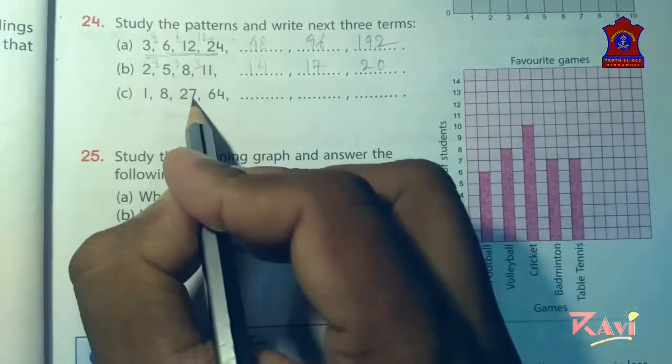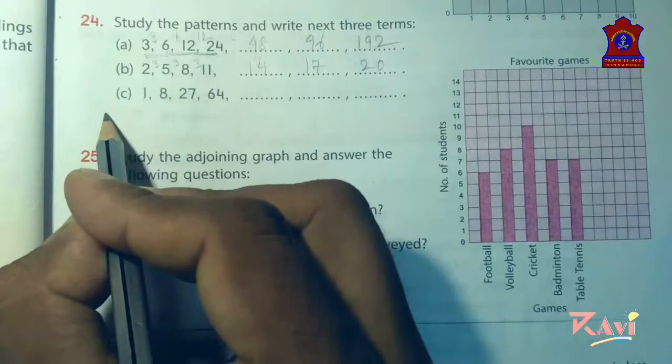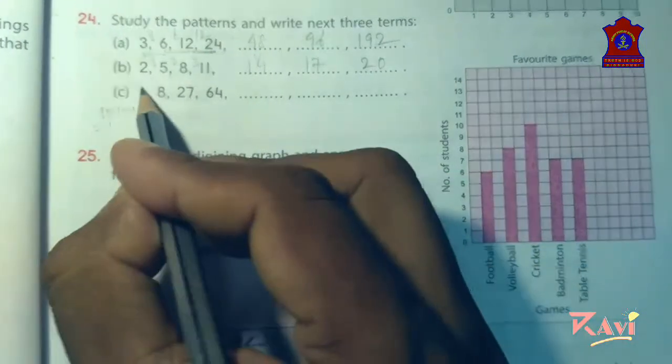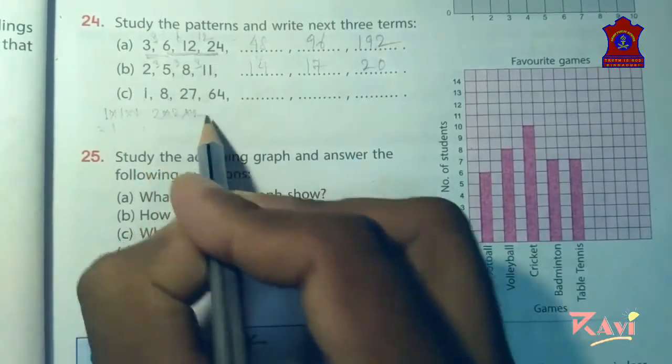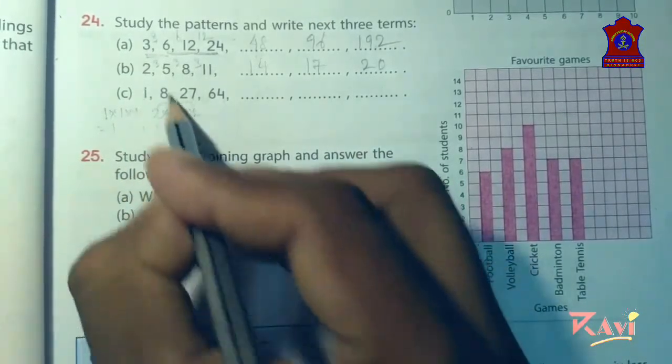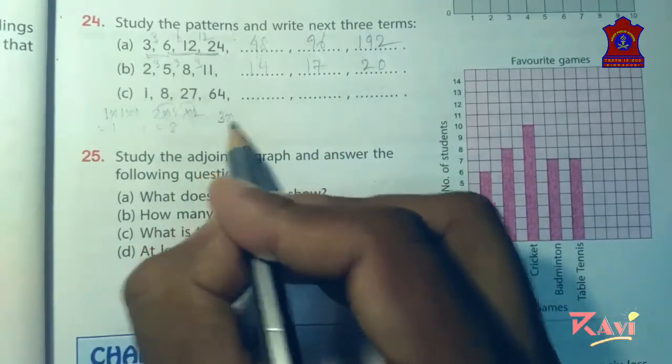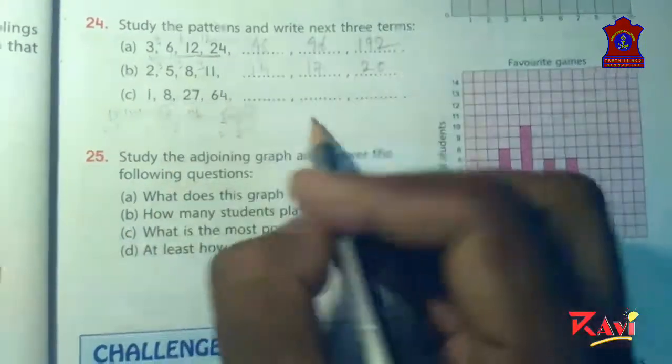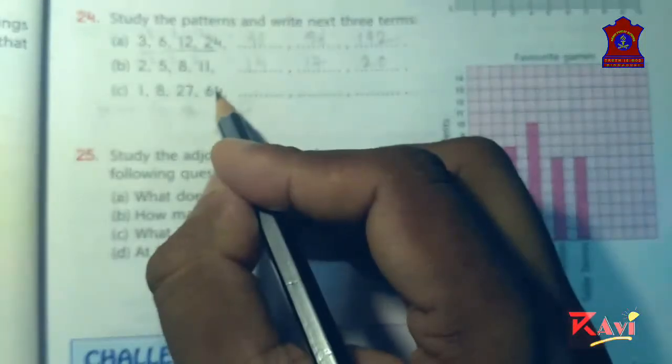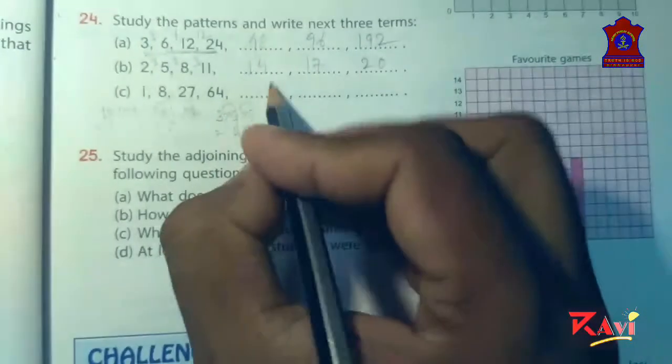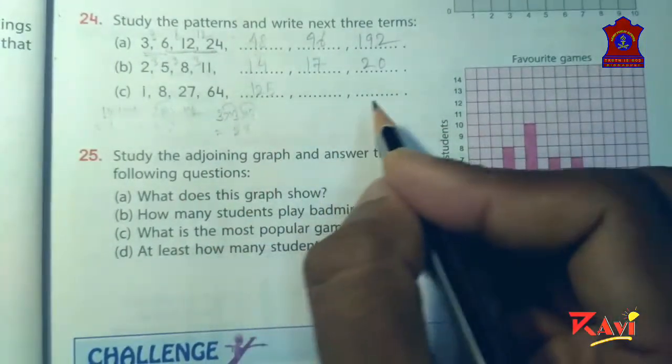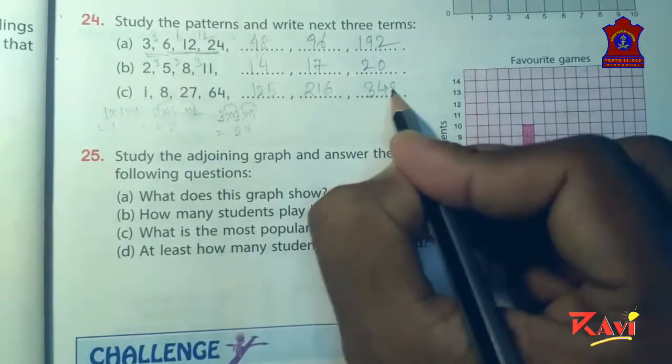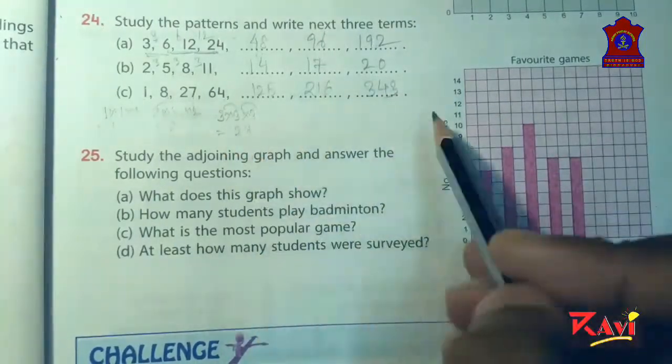Now here, see 1, 8, 27, 64. What is the cube of 1? 1 into 1 into 1 equals to 1. So 2 into 2 into 2 is 8. 3 into 3 into 3 equals to 27. It is the cube of 4. What is the cube of 5? 125. Cube of 5. What is the cube of 6? 216. What is the cube of 7? 343. So like this you have to do.